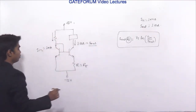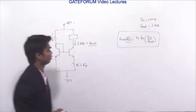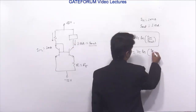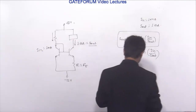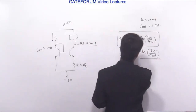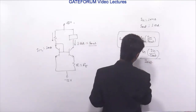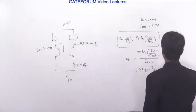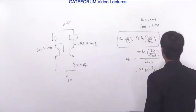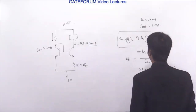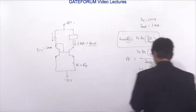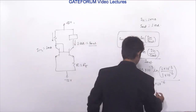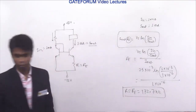Re = Vt × ln(Iin / Iout) / Iout. Substituting values: Vt = 25 × 10⁻³, Iin = 1 × 10⁻³, Iout = 1 × 10⁻⁶. Solving this gives Re = 172.7 kilohms. This is the answer.